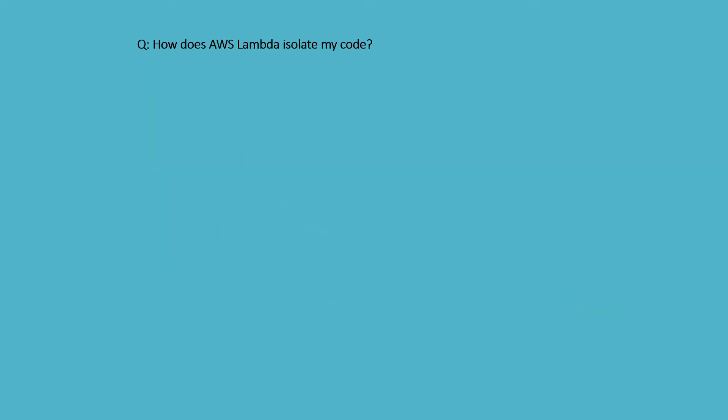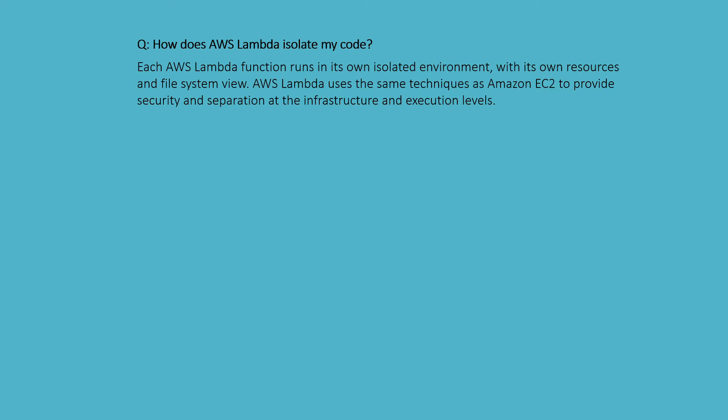How does AWS Lambda isolate my code? Each AWS Lambda function runs in its own isolated environment with its own resources and file system view. AWS Lambda uses the same techniques as Amazon EC2 to provide security and separation at the infrastructure and execution level.